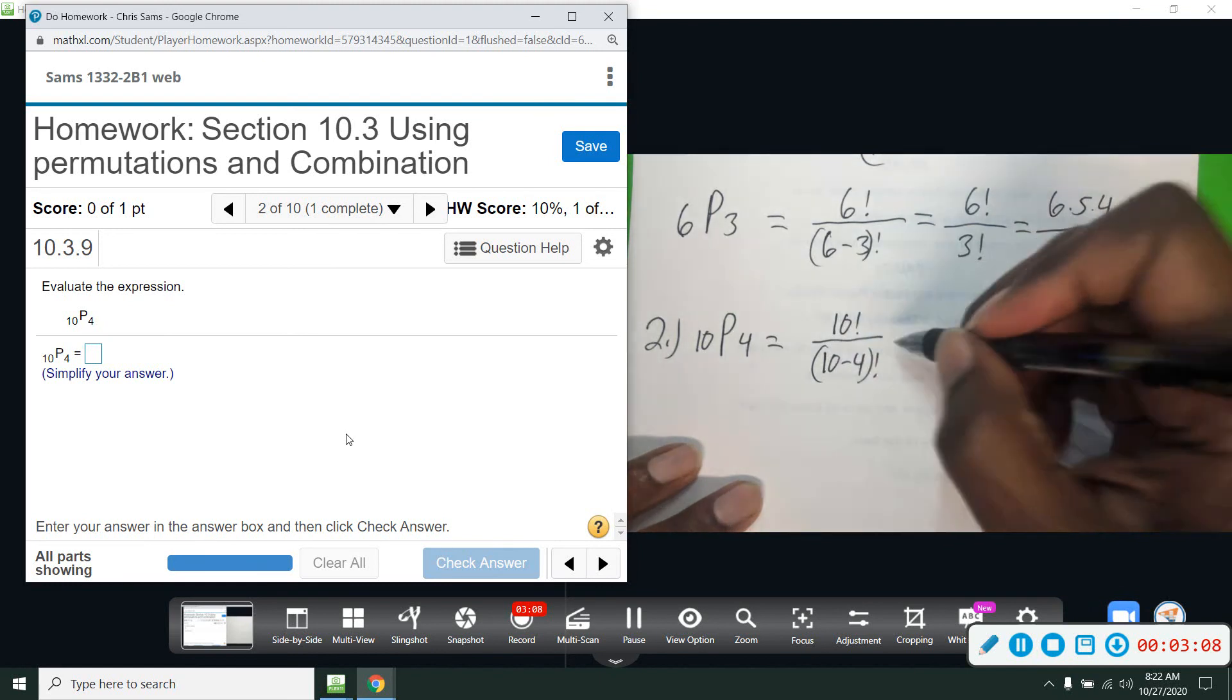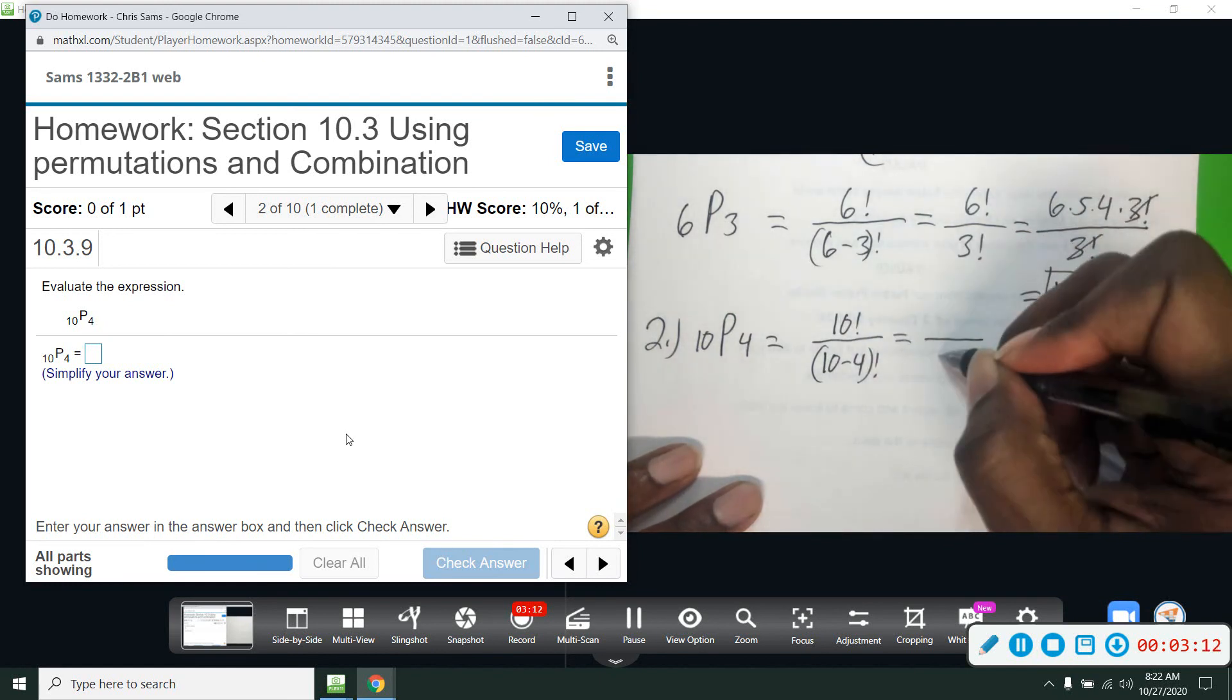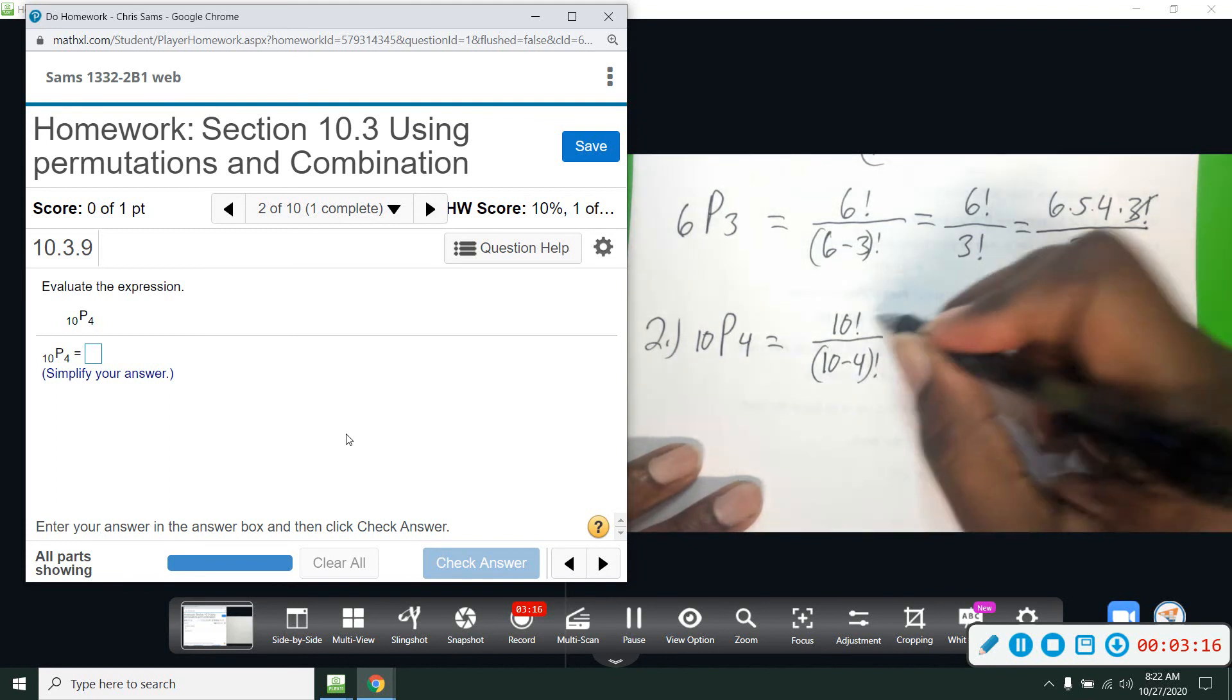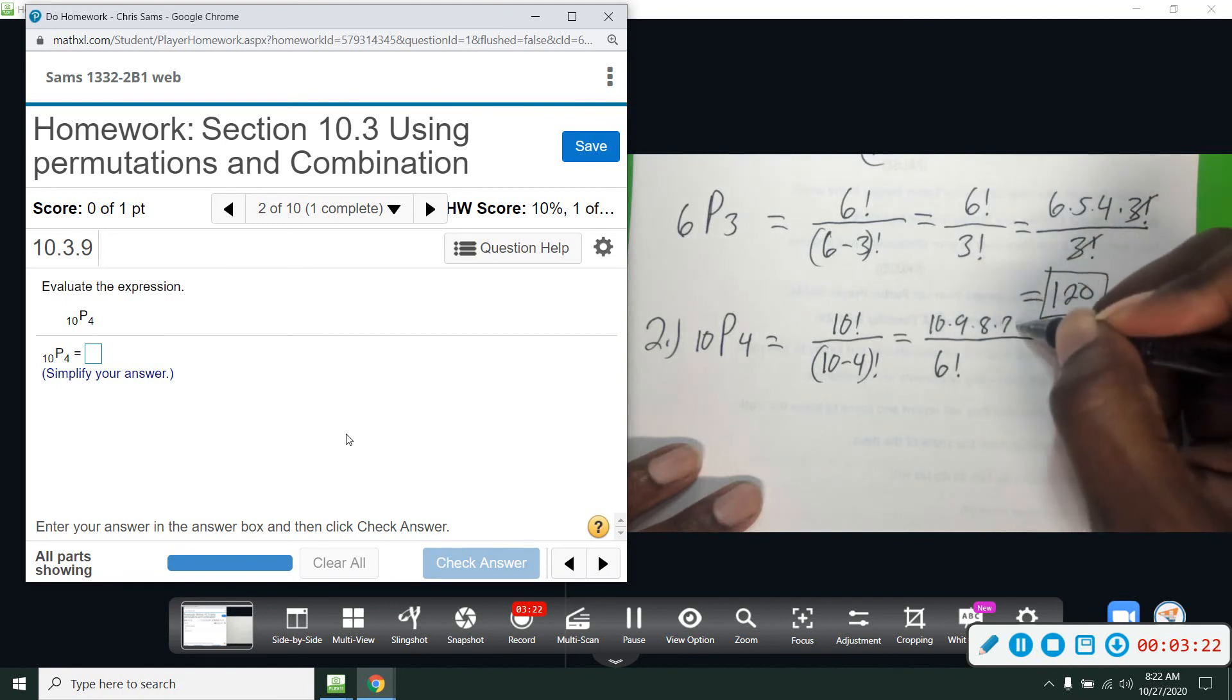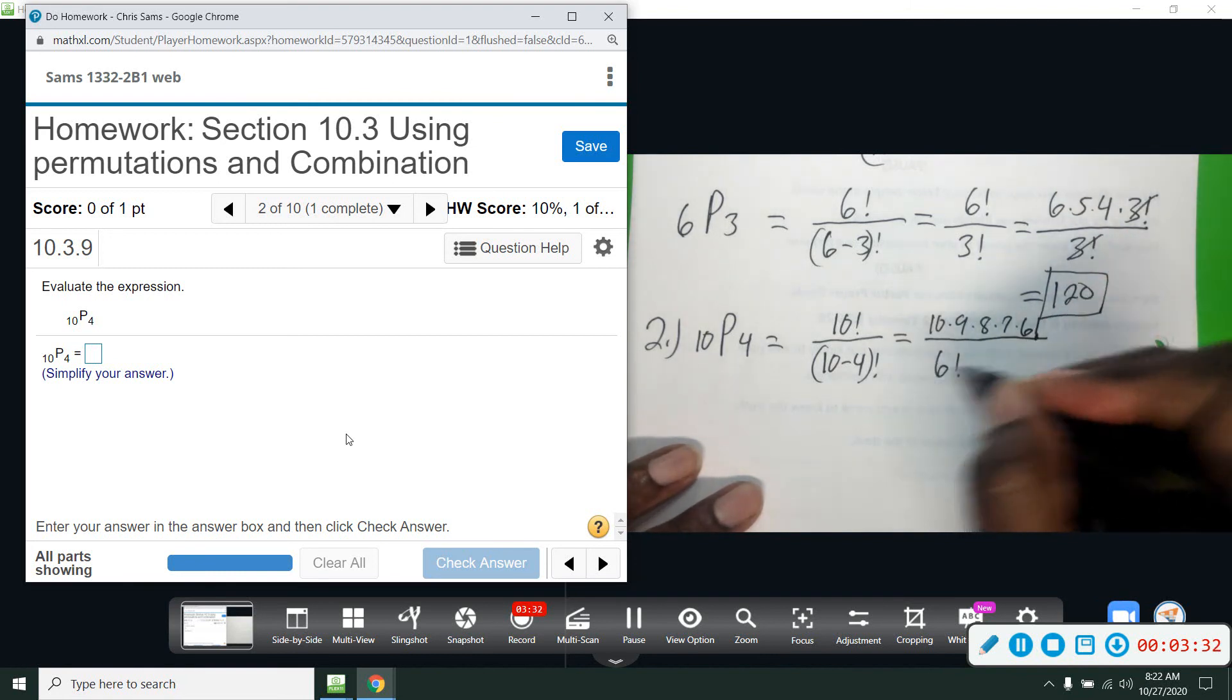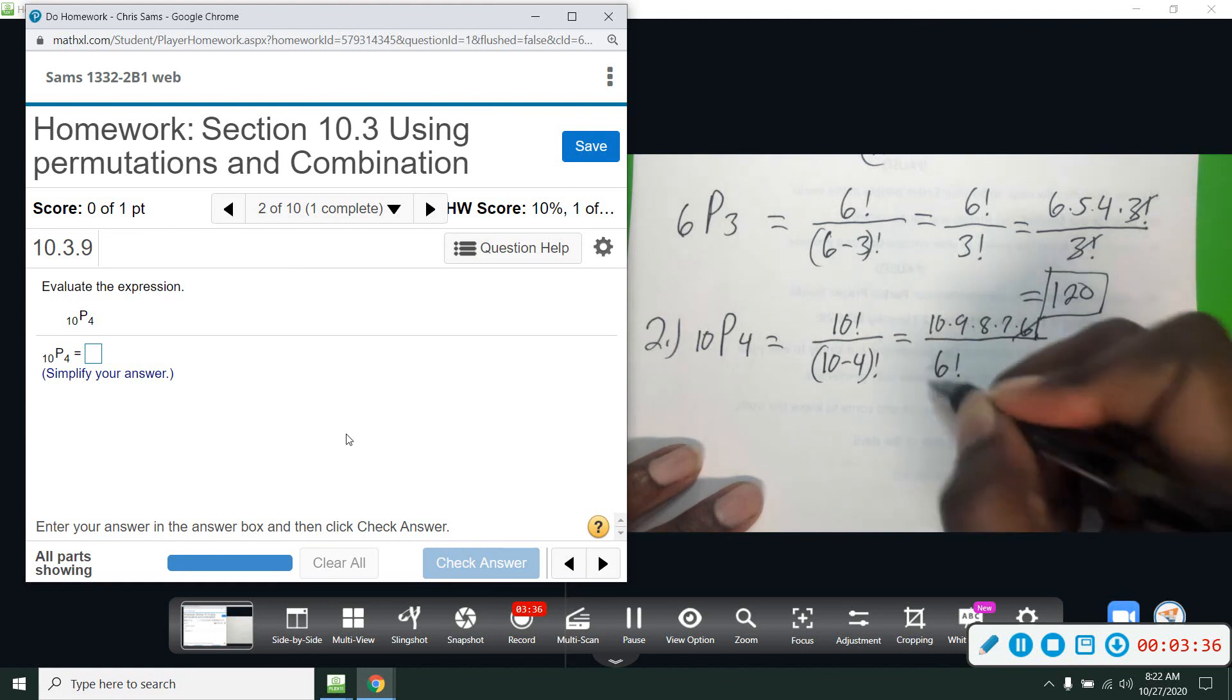All right, so 10 minus 4 is 6, so I'm going to write 6 factorial on the bottom. I'm going to start spelling out this 10 factorial: 10 times 9 times 8 times 7 times 6. Stop at 6, and then we have 6 factorial on the bottom. Instead of writing all of those and then striking them out, just stop there and cross those out.